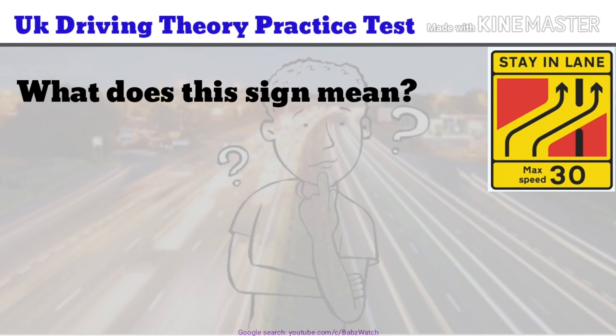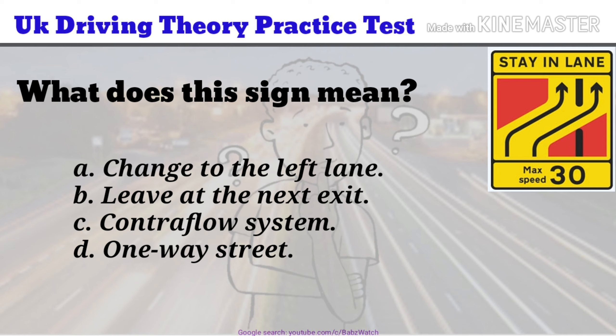UK Driving Theory Practice Test Question 3 of 50. What does this sign mean? a. Change to the left lane. b. Leave at the next exit. c. Contraflow system. d. One way street. The correct answer is c.